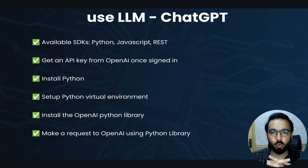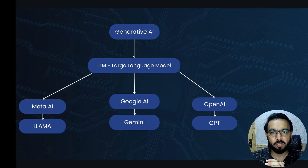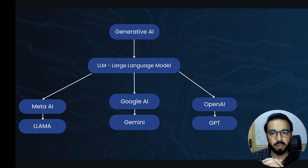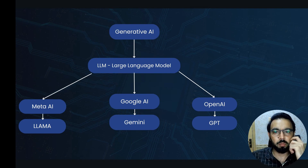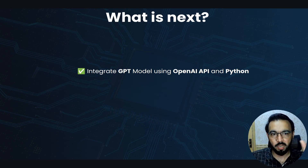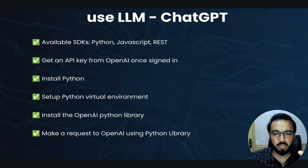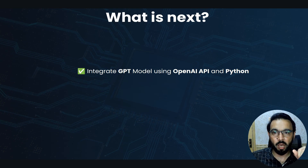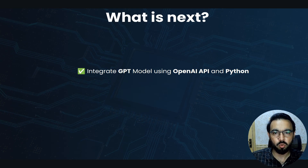This was a brief introduction to generative AI, non-generative AI, large language models, and what companies have built their own LLMs — and how to use them personally or integrate them into your application. In the next video, I'll integrate a GPT model — probably GPT-3.5 and GPT-4o — using the OpenAI API and Python. All the steps discussed here will be implemented practically in a hands-on demo.